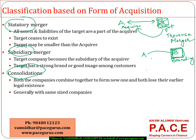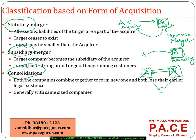In a consolidation, neither A nor B continues to exist. Both combine to form an entirely new legal entity, C, and it is C that exists going forward. This kind of deal is generally possible between companies of more or less equal size — like Arcelor and Mittal coming together to form ArcelorMittal, where the individual companies ceased to exist.